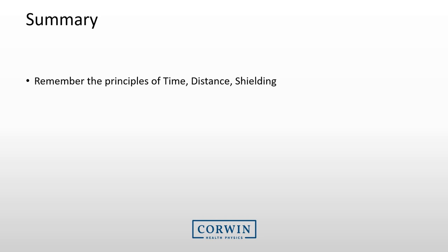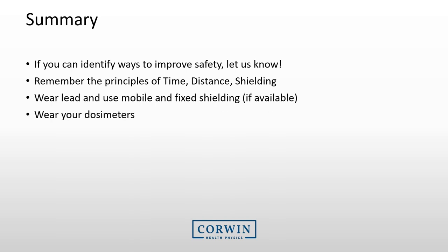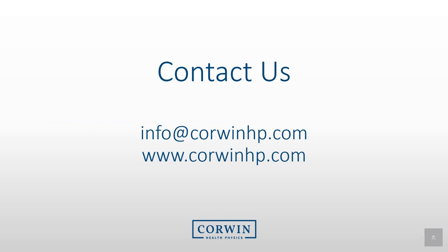To summarize: radiation doses to patients and staff can be greatly reduced if practical optimization steps are taken. These include planning the procedure in advance, positioning equipment and the patient to reduce exposure, and using optimized equipment settings. Wear personal lead protection and use mobile and fixed shielding. Whenever possible, stand on the detector side of the patient. Wear your radiation dosimeters and return them to your radiation safety officer when due. Remember: reducing patient radiation exposure always results in lower exposures to staff. If you identify ways to improve safety, let us know.